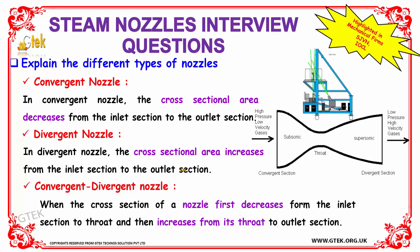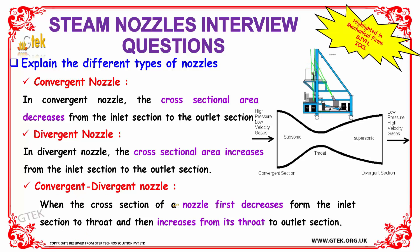In the convergent-divergent nozzle, the cross-section of the nozzle first decreases from the inlet section to the throat, and afterwards it increases from the throat to the outlet section. This is the phenomenon behind the convergent-divergent nozzle type.